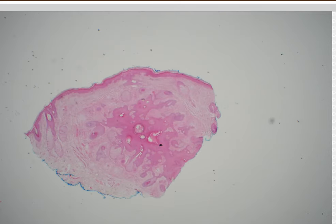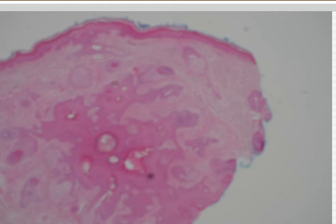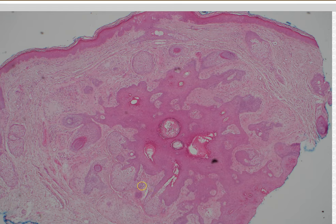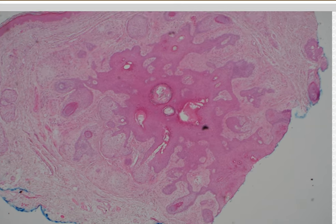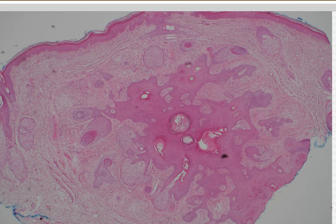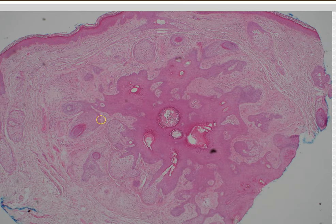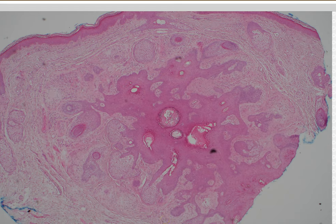Case 26. You can take two different approaches here — you could call this a trichofolliculoma, with the central hair follicle and lots of little hair follicles emptying into it — the hen and chicks or mother follicle and baby follicles. Or if you like, you could focus on the fact that there's a lot of mature sebaceous glands here and call it a sebaceous trichofolliculoma — the other name being folliculosebaceous cystic hamartoma. I think either term would be acceptable, as they're on a closely related spectrum. From low power you can see the border of the lesion clearly — it has its own distinct dense stroma, clearly different from the background dermis.